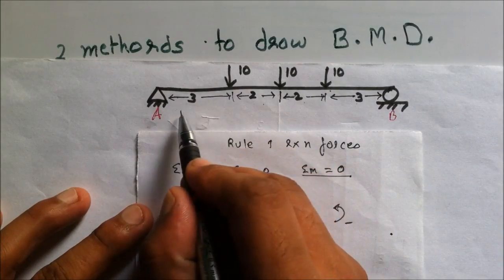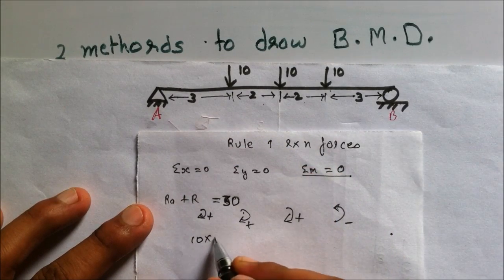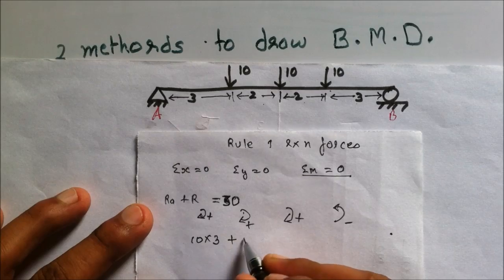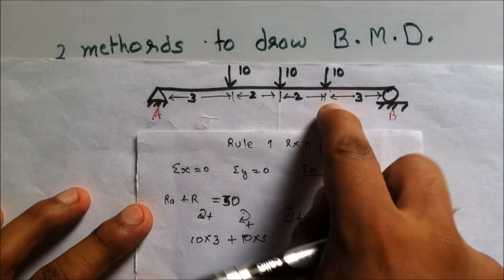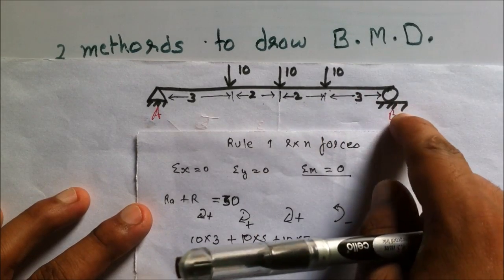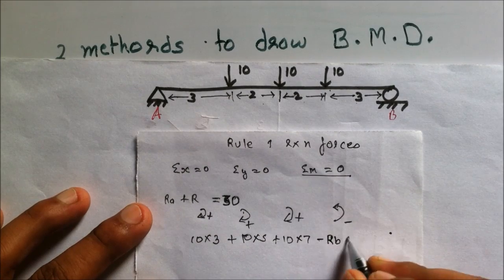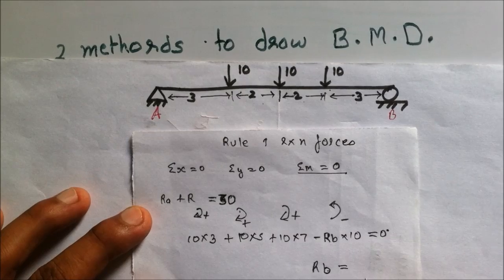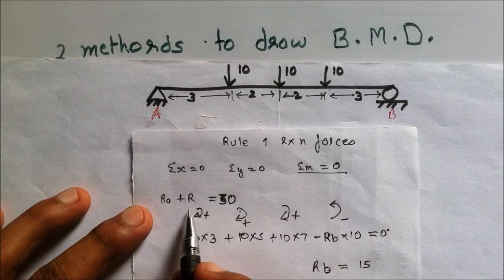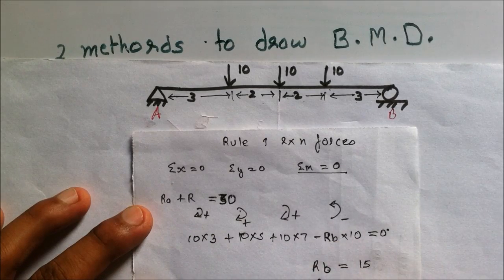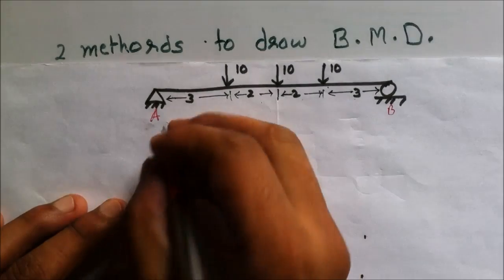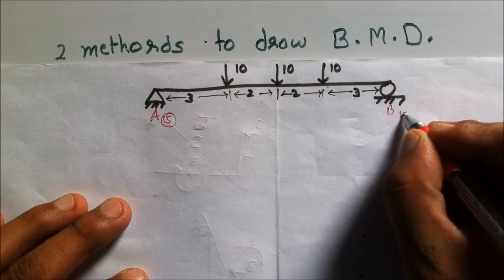For the moment summation, the first force 10 kilonewton is at a distance of 3 meters, so 10 cross 3; the second 10 kilonewton is at 3 plus 2 equals 5 meters, so plus 10 cross 5; the third 10 kilonewton is at 7 meters, so plus 10 cross 7; then minus RB at a distance of 10 equals zero. Solving this gives RB equals 15 kilonewton and RA equals 15 kilonewton.